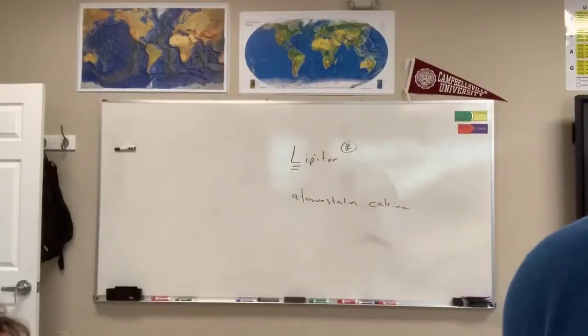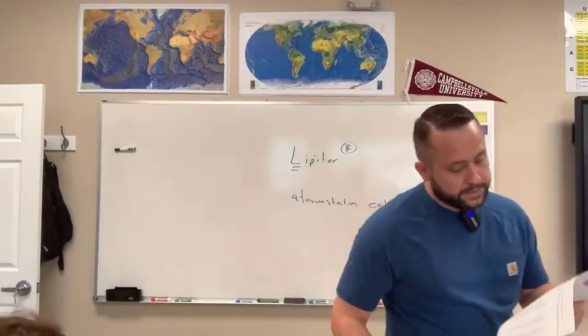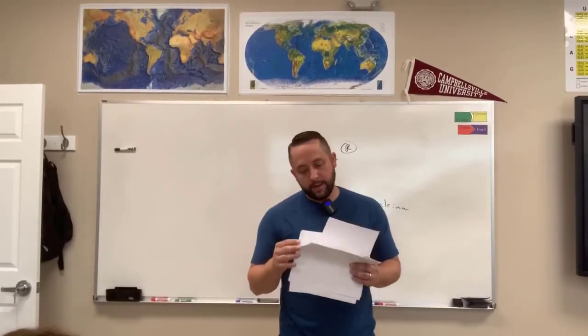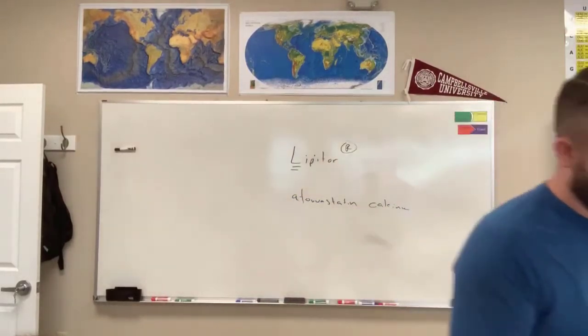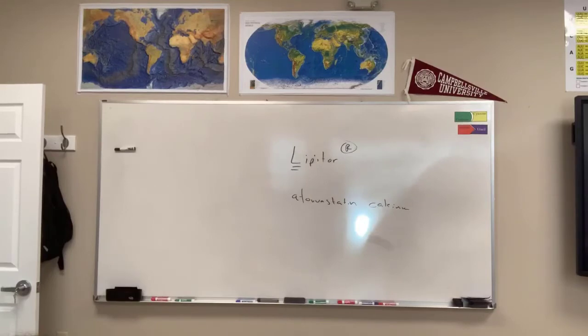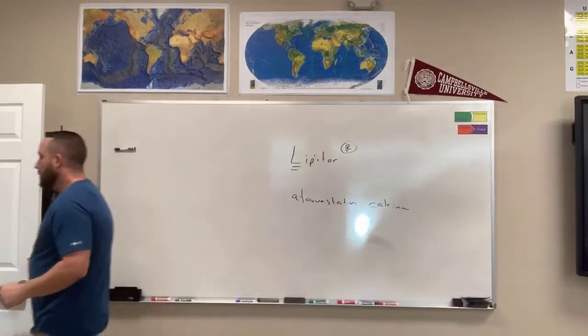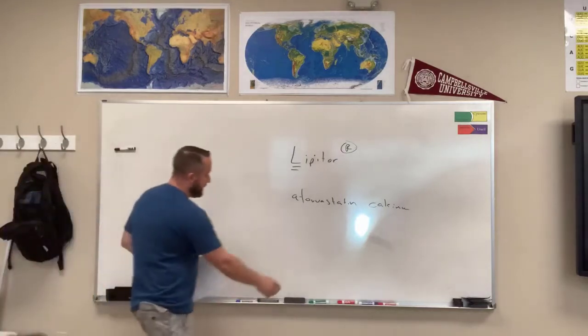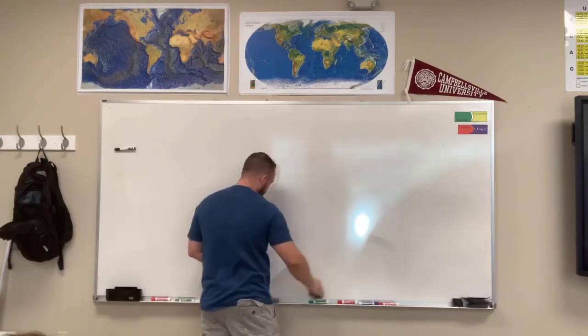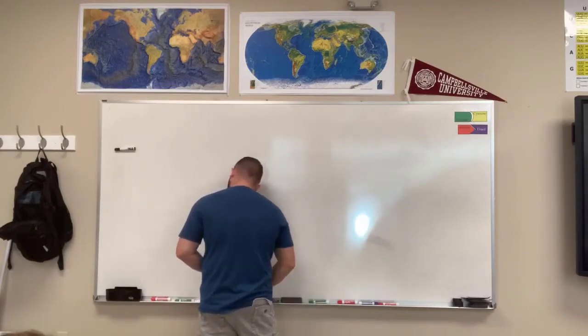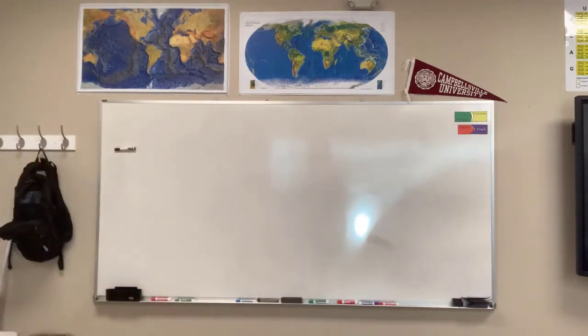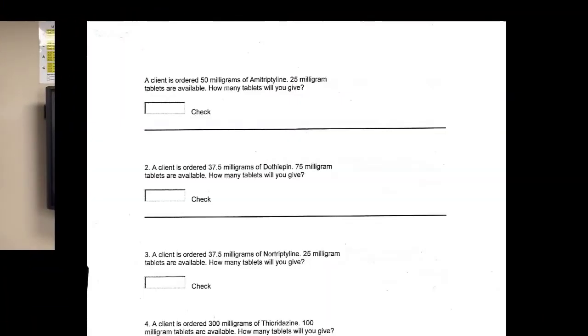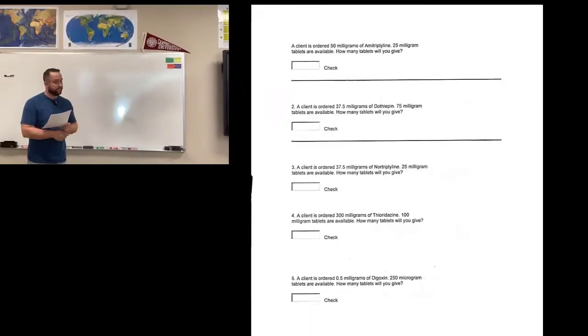Okay, so we're looking at this practice handout. This is the first of the actual math, and you're going to see it's not that hard, but I just want to go through a couple of these with you and then I'll assign the rest for homework. The first one says a client has ordered 50 milligrams of amitriptyline, but you only have 25 milligram tablets available. How many are you going to give?